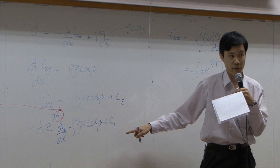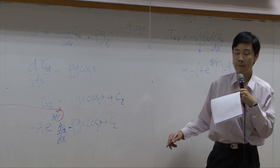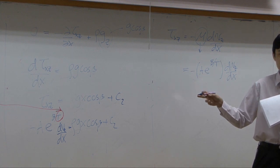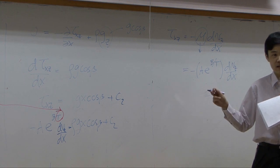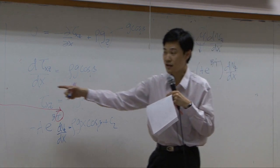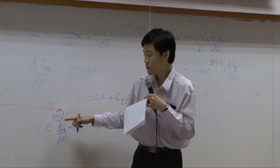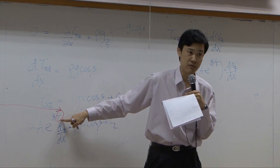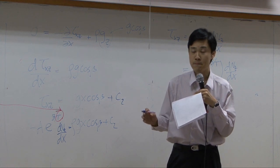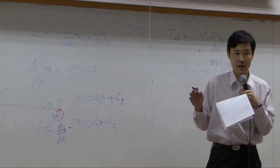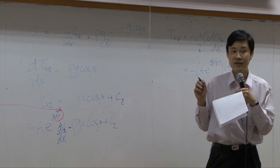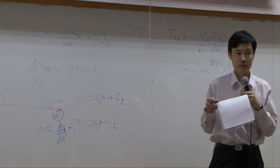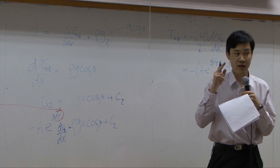You get the velocity profile after integration. Theoretically of course, but practically the integration itself is very, very complicated because temperature is a linear function of x, and x appears in the inverse of the power of the exponent, making it quite difficult. Suppose you can integrate it — how many constants do you need? Two.